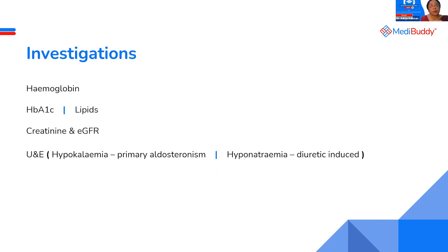Now in medical school or in some exams, we see that low potassium with high blood pressure equals Conn's syndrome. But interestingly, many patients with primary aldosteronism or Conn's syndrome do not have hypokalemia. So it does not mean normal potassium rules it out.